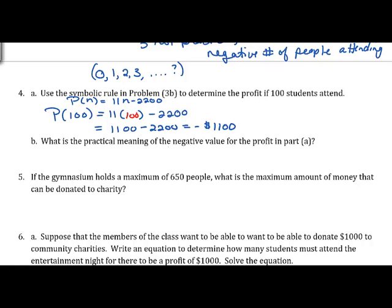What is the practical meaning of this negative profit value? The $1,100 is the revenue from the 100 people attending. This negative value means that we will be losing money — we're actually losing $1,100.